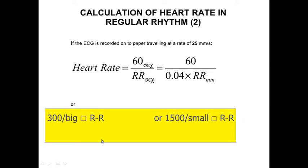For ECG recorded at a speed of 25 mm per second, you can divide 60 by the RR interval in small boxes multiplied by 0.04. Or use the simple formula: 300 divided by the big squares between the RR. Or, if you count small boxes, use 1500 divided by the small boxes between the RR.